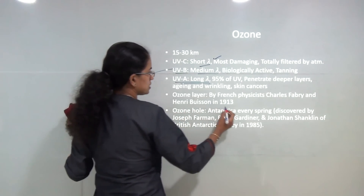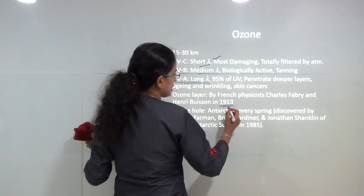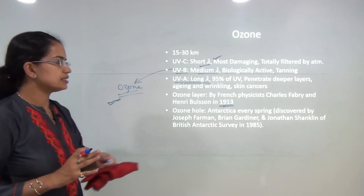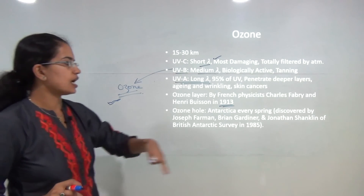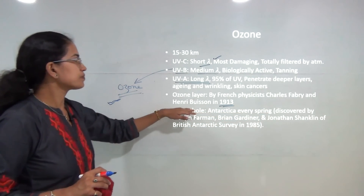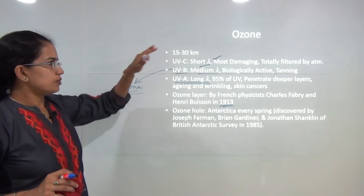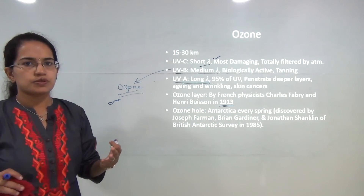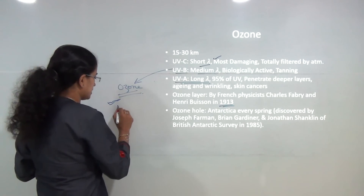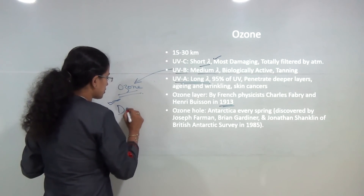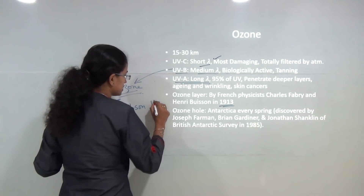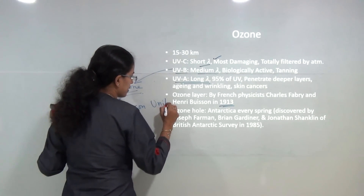The ozone layer was first discovered in 1913 by French physicists Charles Fabry and Henri Buisson. When we talk about measuring ozone, the Dobson unit is one of the standard methods by which we measure the amount of ozone in the atmosphere.